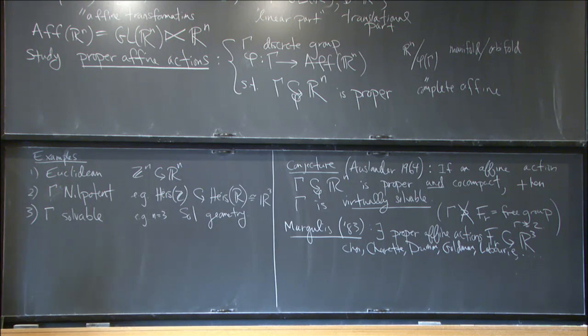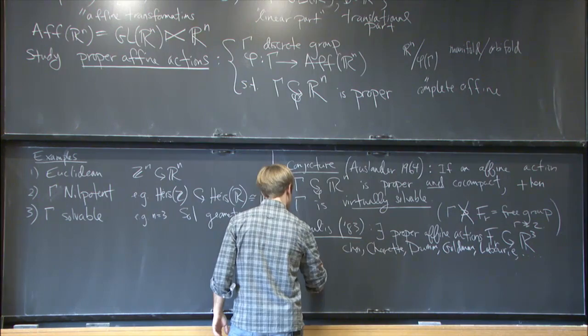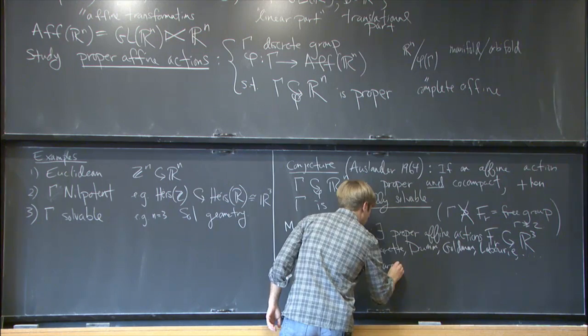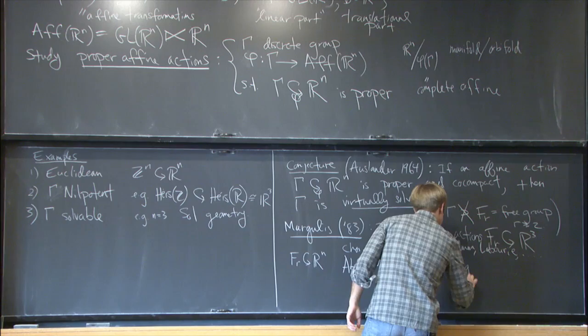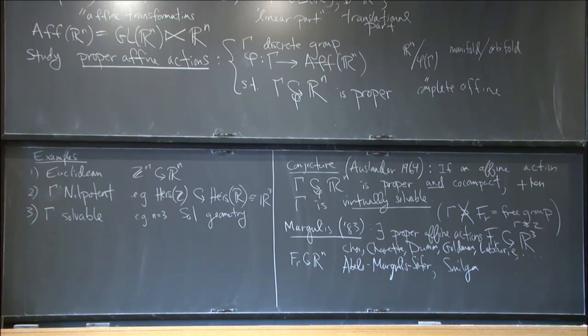In higher dimensions, for free groups acting in higher dimensions, Abels, Margulis, and Soifer, and recently Smilga, have studied different ways to make free groups act properly on some R^n by affine transformations.